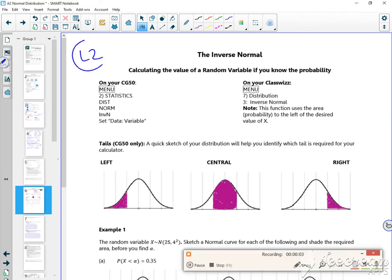Hi everyone, this is lesson two of the normal pack. We've done some work finding probabilities using NCD and NPD, so now we're going to do inverses. It's the same idea - you work out areas, you're given areas, and you take it back to the x values.